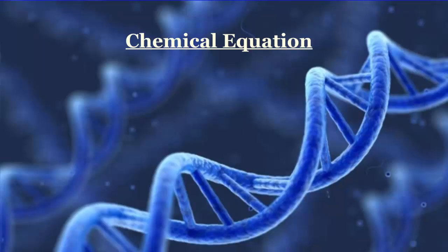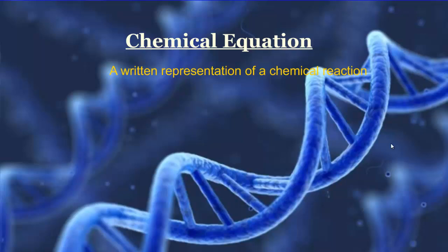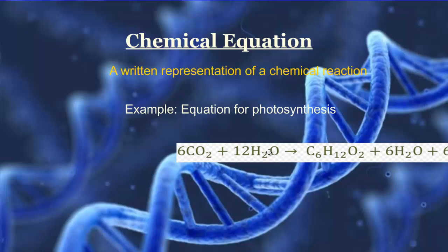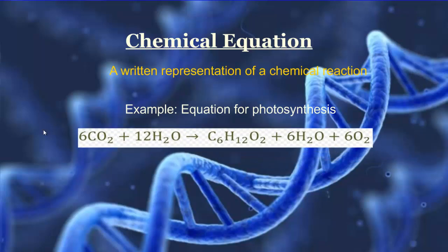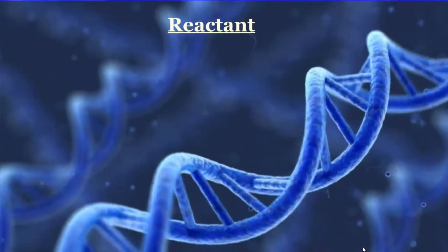A chemical equation relates back to chemical reaction. A chemical equation is simply a written representation of a chemical reaction. An example is the equation for photosynthesis. The two are hard to separate since one represents the other — and since you'll need to know the photosynthesis equation for your assessment, this is a good time to get introduced to it.